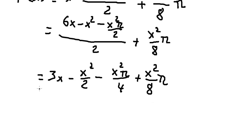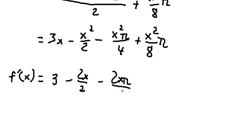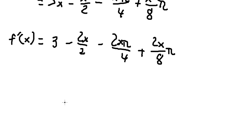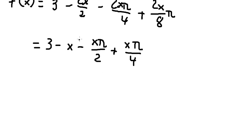Now we have the function f(s). To find the maximum value, we need to find the derivative of the function first. Taking the derivative: this term gives us one, this term gives us two s, and combining those terms we get negative s pi over four.